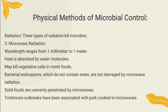Microwave radiation has wavelengths ranging from 1 mm to 1 m. The heat is absorbed by water molecules, and microwave radiation may kill vegetative cells in moist foods. However, bacterial endospores, which do not contain water, are not damaged by microwave radiation, and solid foods are unevenly penetrated by microwaves.